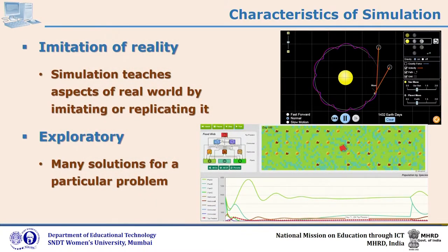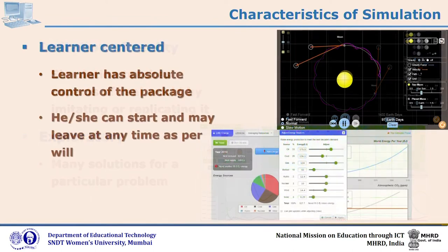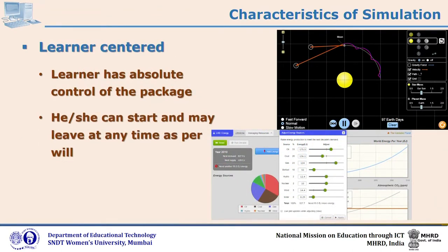With the help of these examples we can understand the characteristics of simulation. This is imitation of reality — the entire universe and environment is represented here. Simulation teaches various aspects of the real world by imitating or replicating it. You can find many solutions by changing variables, so learners can go on exploring and decide what will happen if they reduce plants in the environment. That's why simulations are learner-centered — learners have absolute control over the package.